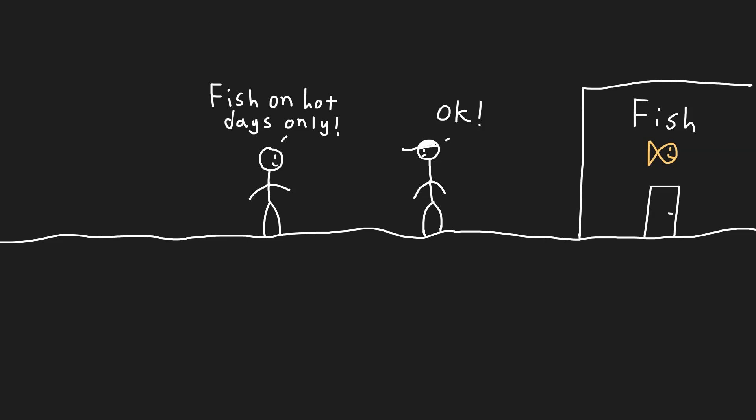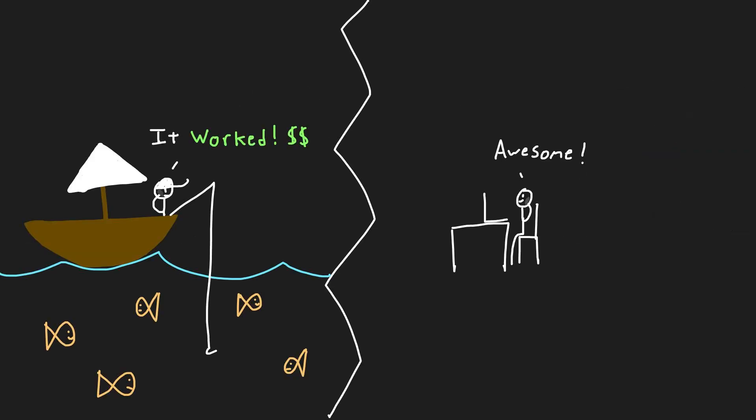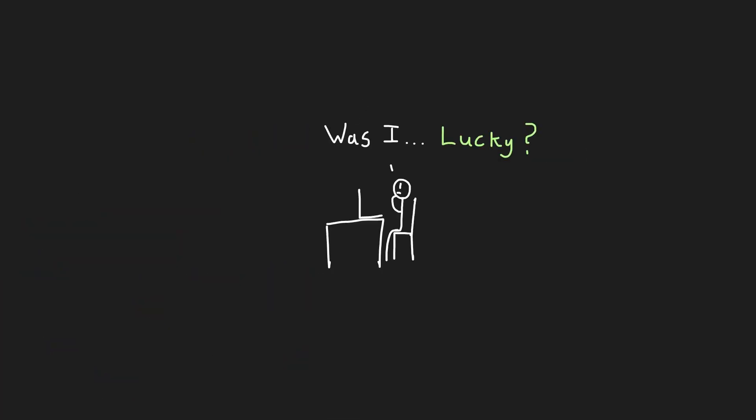After explaining this to him, you suggested he focus on fishing only during the hottest days of the week, and about a month later he called you up and claimed his profits had doubled. So why did his profits double? Was it just luck or is there something else going on?